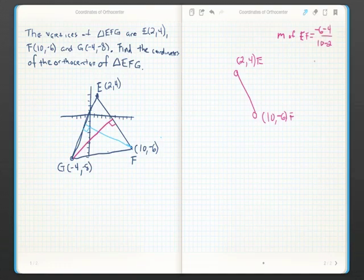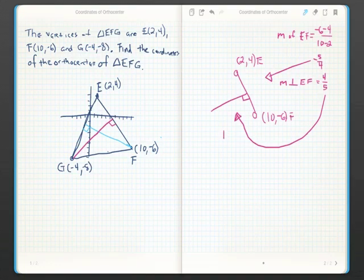So we're going to take EF, find the slope of it, and then take the negative reciprocal of that slope. Now we have a perpendicular slope. BAM!